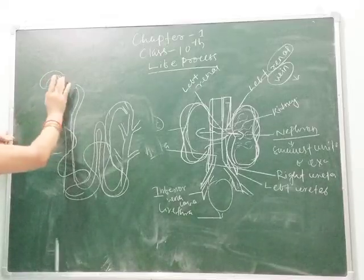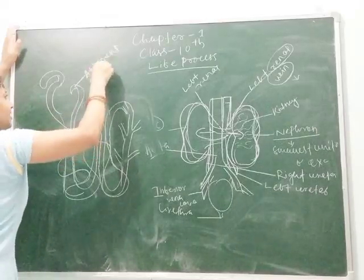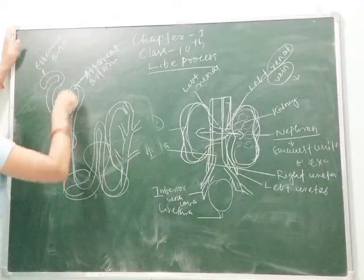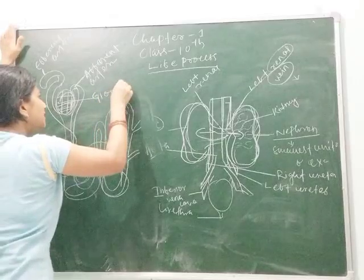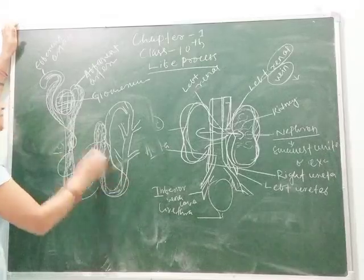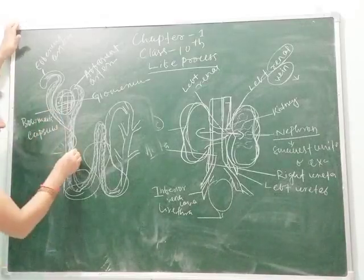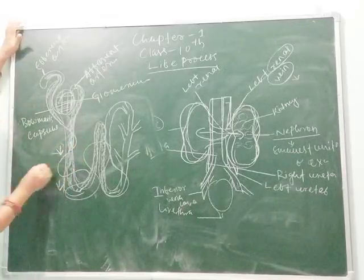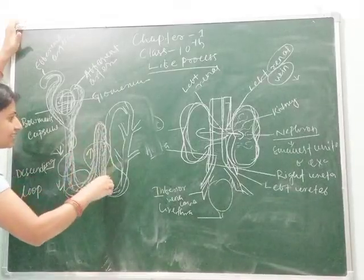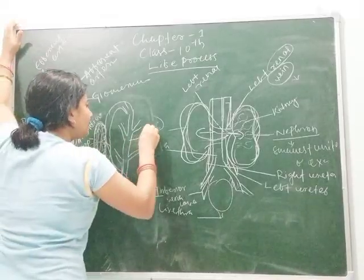In the nephron structure, the afferent artery brings blood in. The cup-like structure surrounding the capillaries is called the glomerulus. The tubule has a descending lobe and an ascending lobe, and the final part is called the collecting duct.